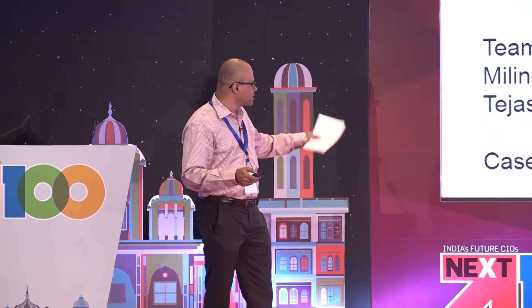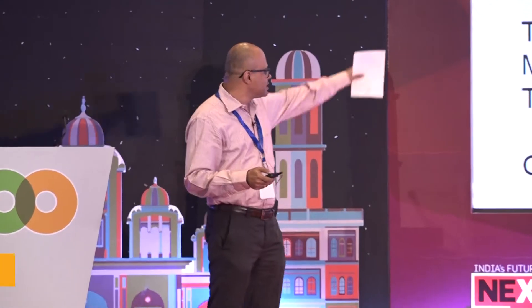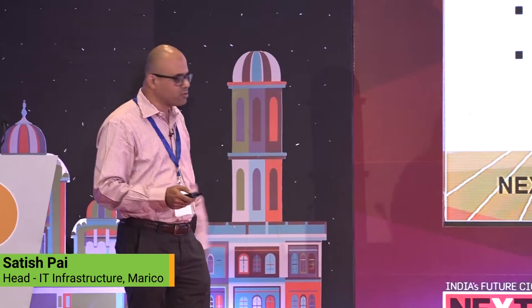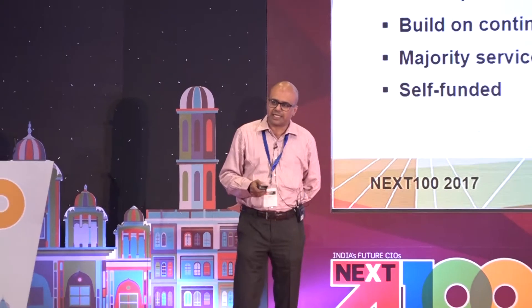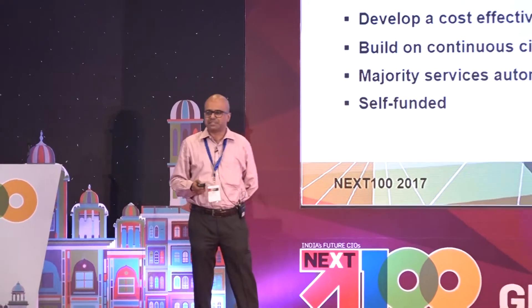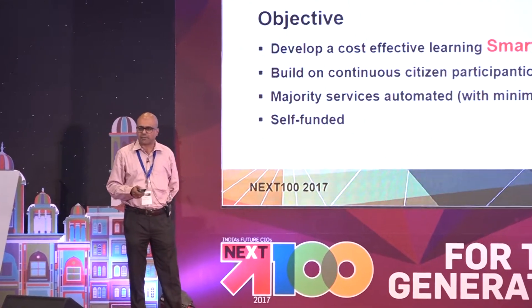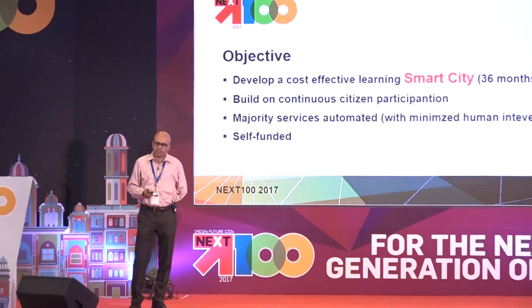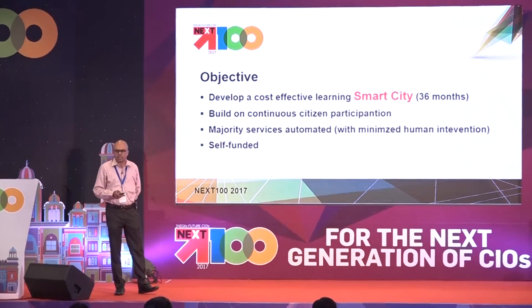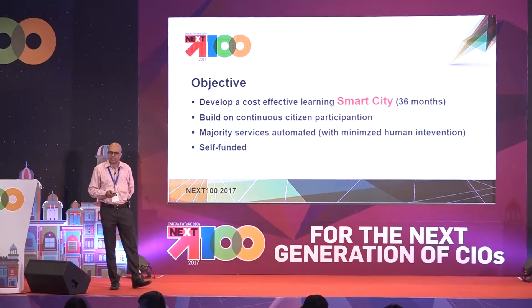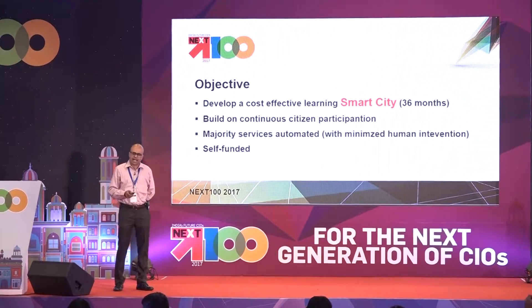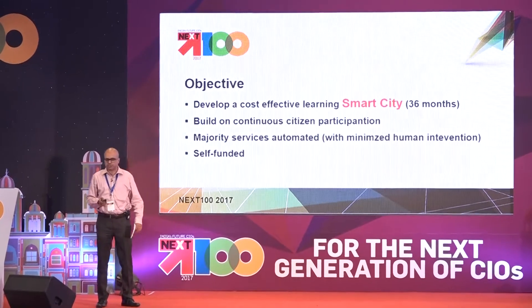We are team 6. The team name is NEXT6, which we will understand on the last slide of the presentation. The objective is to develop an effective learning smart city. This city has been selected for a smart city project by the Government of India. The population of the city is 1.3 million, and its major economic activities are tourism and exports of spices.